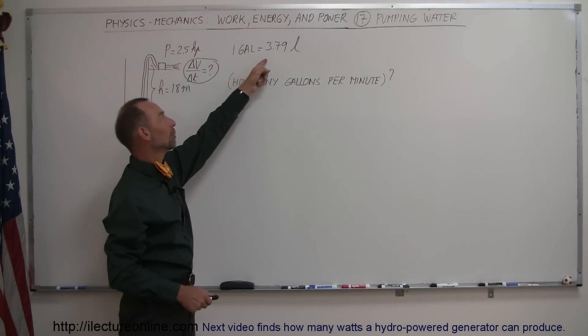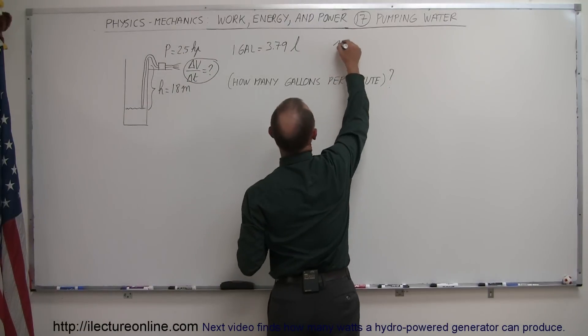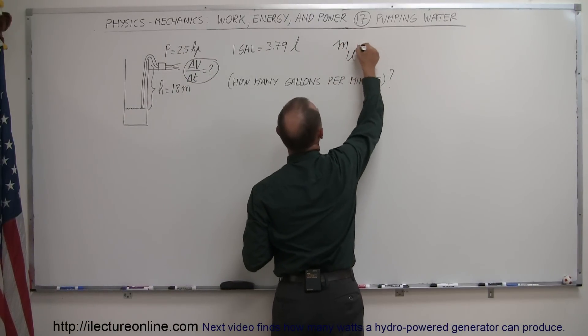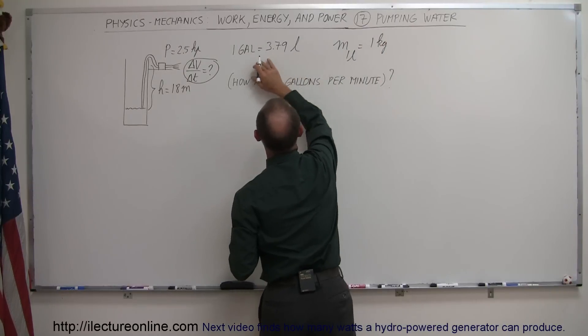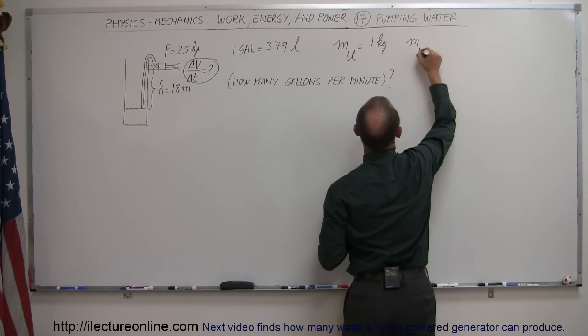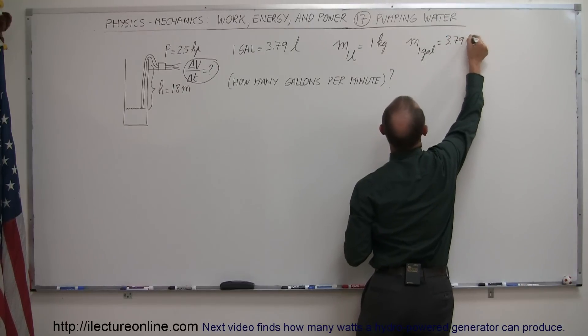Keep in mind that a gallon is 3.79 liters, and the mass of one liter of water is equal to one kilogram. So the mass of one gallon is equal to 3.79 kilograms.